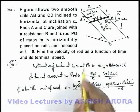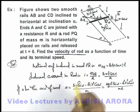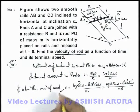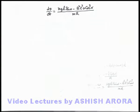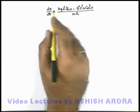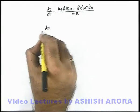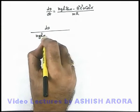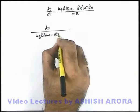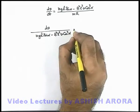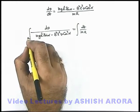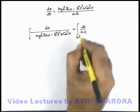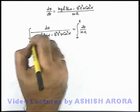To find the velocity of the rod as a function of time, we write acceleration as dv/dt and separate the variables. Continuing on the next sheet, we separate the variables as: dv / (mgR·sin(α) − B²L²v·cos²(α)) = dt / (mR). Integrating within limits from t = 0 to t, and speed from 0 to v.